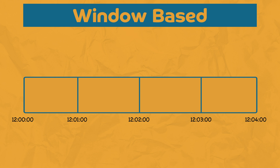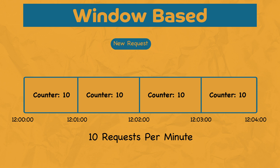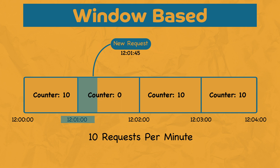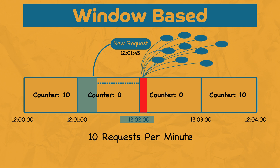For example, say we are implementing a rate limit of 10 requests per minute, and each window contains a counter of 10. If a new request comes in at 12:01:45, it will be allocated to the window of 12:01. If the counter is greater than zero, we keep decrementing the counter and process the request. If the counter is already zero, it means 10 requests have already been exhausted in that window, so any new request during that window will be discarded. The biggest shortcoming of this fixed window algorithm is that if the counter runs out at the start of the window, all clients must wait for a long reset window. It can also potentially lead to a sudden burst of traffic near the boundary of the window, because all clients will be waiting for the window to reset.